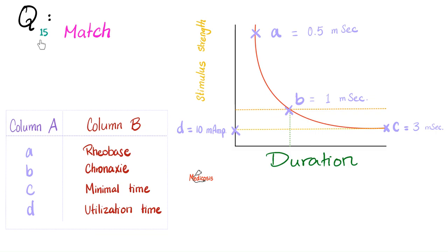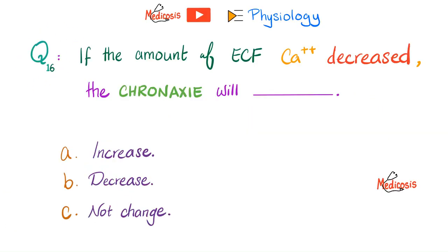I will leave you with two questions. First question: Match from column A to column B. Second question: If the amount of calcium in the extracellular fluid decreased, will the chronaxie increase, decrease, or not change? Let me know the answer in the comment section. You'll find the correct answers in the next video. All of the previous questions and answers are in previous videos in this glorious playlist called Physiology.